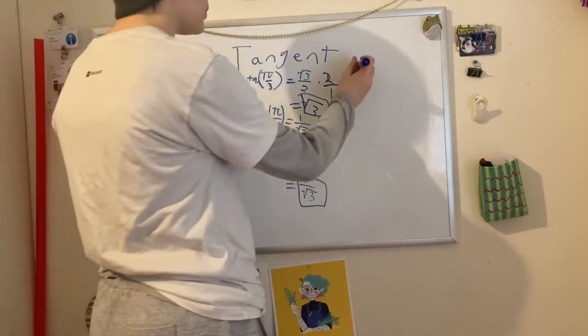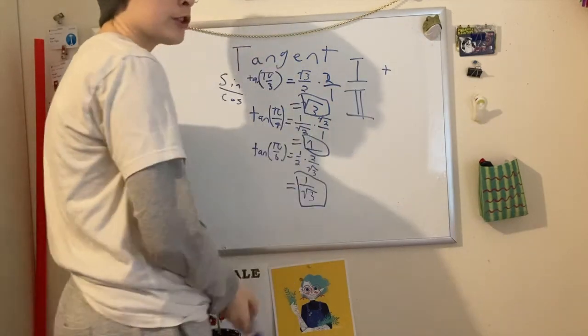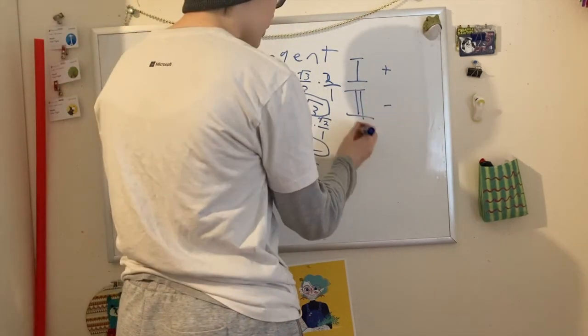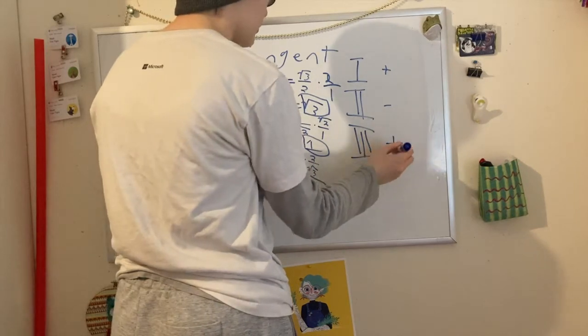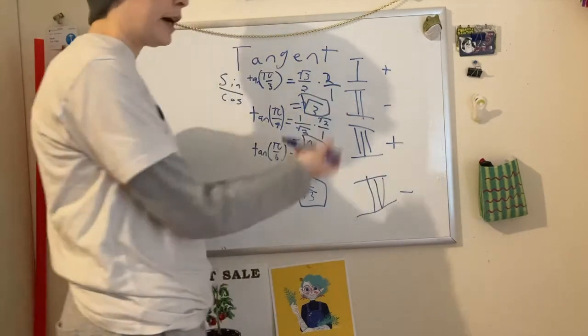Now let's look at the quadrants. The first one, first quadrant, double positive, it's going to be positive. Quadrant 2, one positive, one negative, it's going to be negative. Quadrant 3, both negative, going to be positive, because you're dividing by two negatives equals a positive. Quadrant 4, also negative. You can see the pattern.